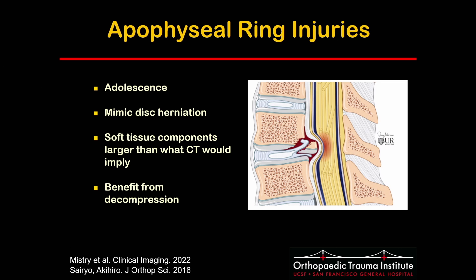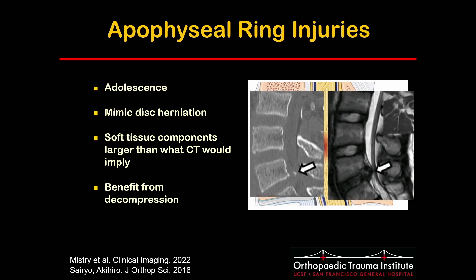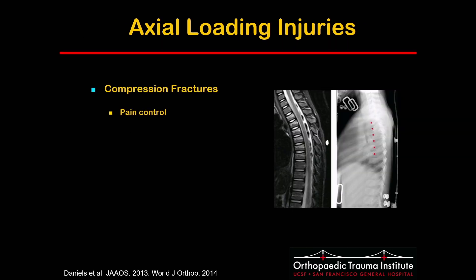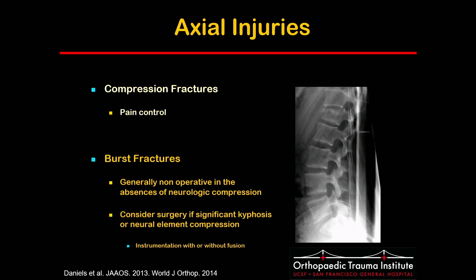Moving to thoracolumbar trauma, this tends to be more similar to the adult population but differences exist. Apophyseal ring injuries, unlike other pediatric injuries, are more common in adolescents and mimic disc herniations. The soft tissue components are often larger than what CT implies, and when symptomatic, benefit from decompression. Compression fractures from axial loading are generally treated non-operatively with pain control. Burst fractures are also generally treated non-operatively in the absence of neurologic compression; however, surgery should be considered if there is significant kyphosis or neural element compression, with or without fusion depending on the specific case.